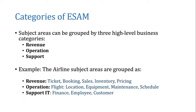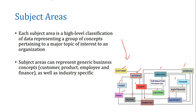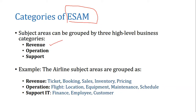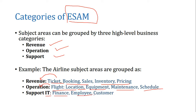In an Enterprise Subject Area Model (ESAM), the subject areas can be grouped into three high-level business categories: revenue, operation, and support. For the airline example, ticket booking, sales, inventory, and pricing are grouped under revenue. The operational aspects — flight, location, equipment, maintenance, and schedule — are grouped under operation. IT, support, finance, employee, and customer are grouped under support.